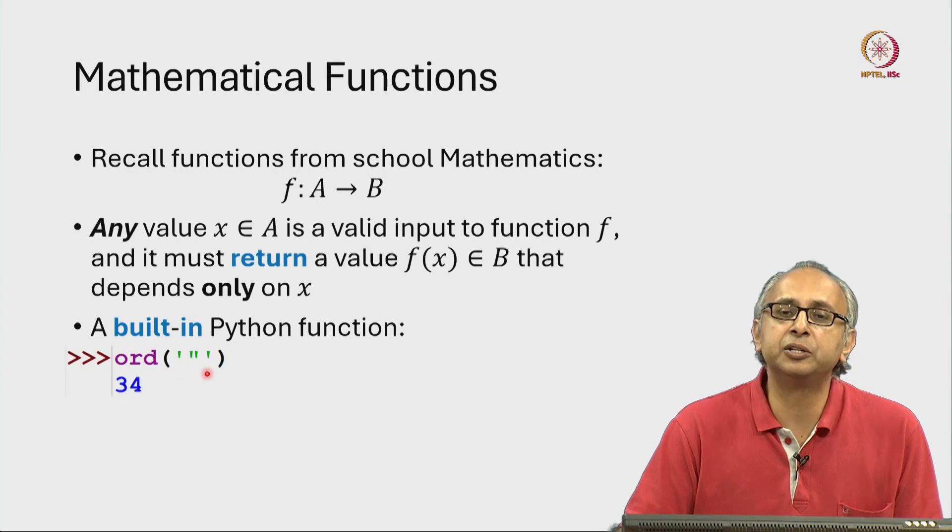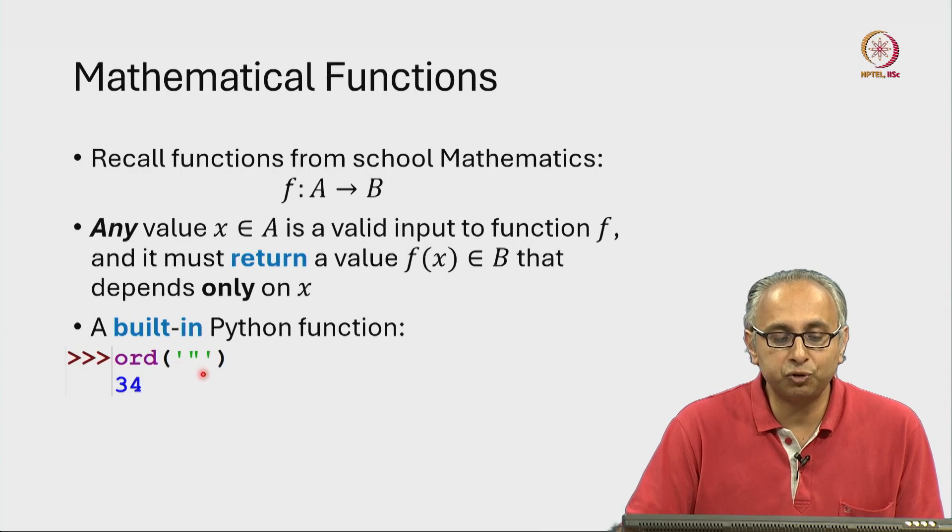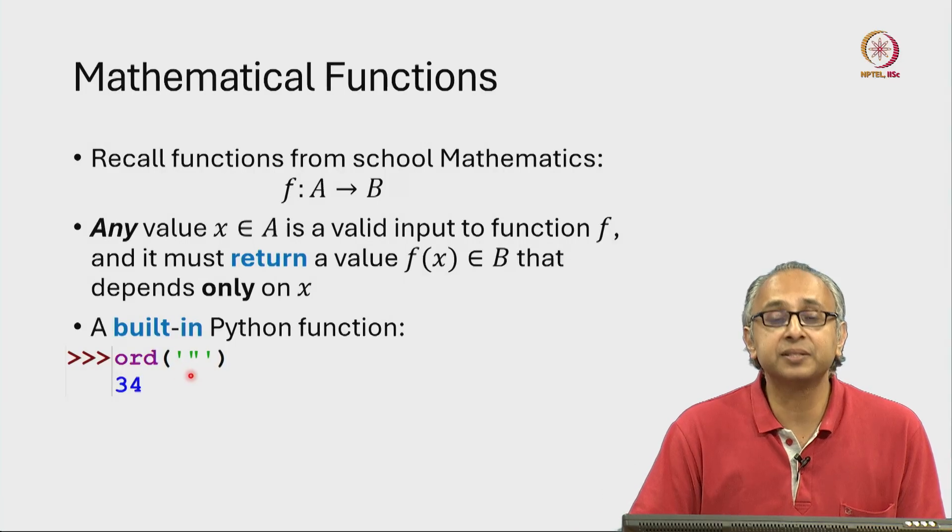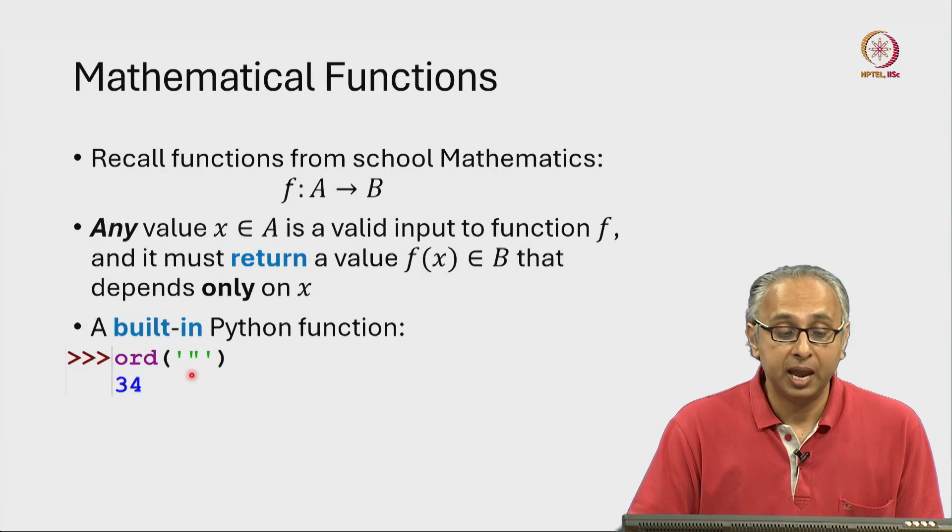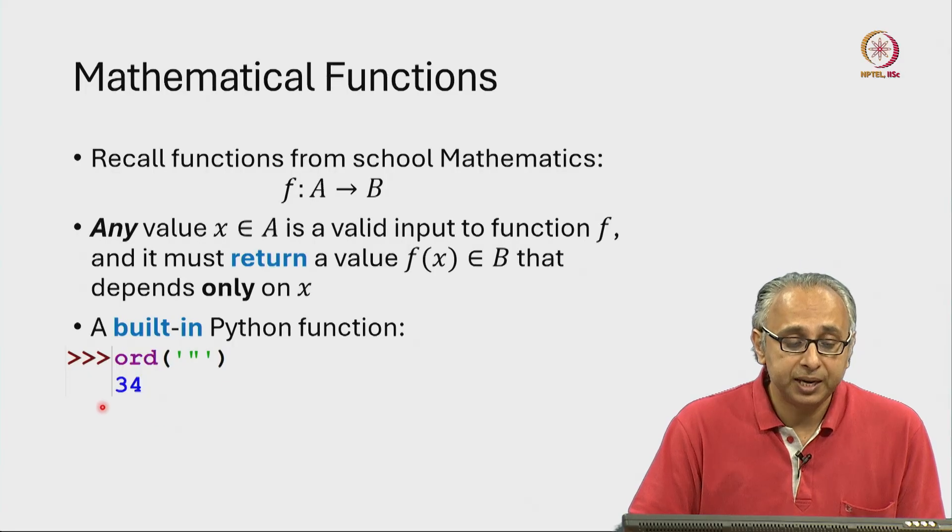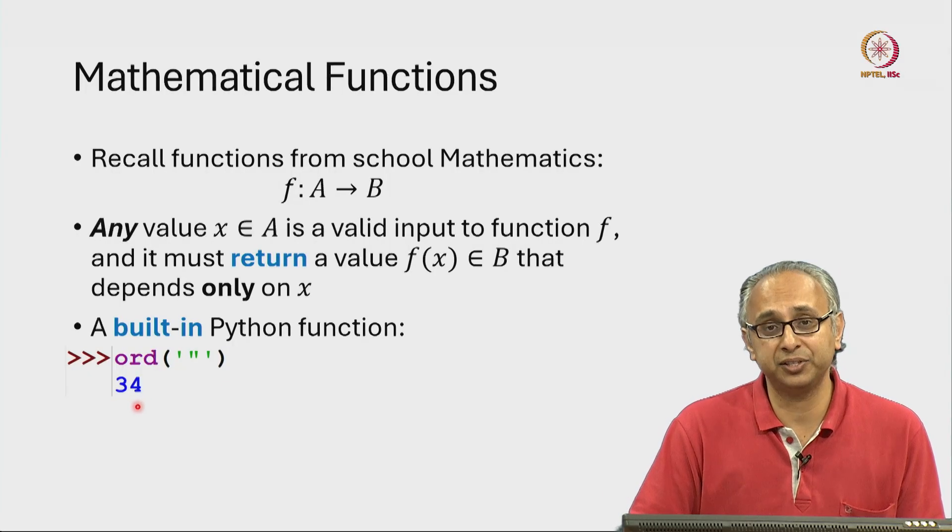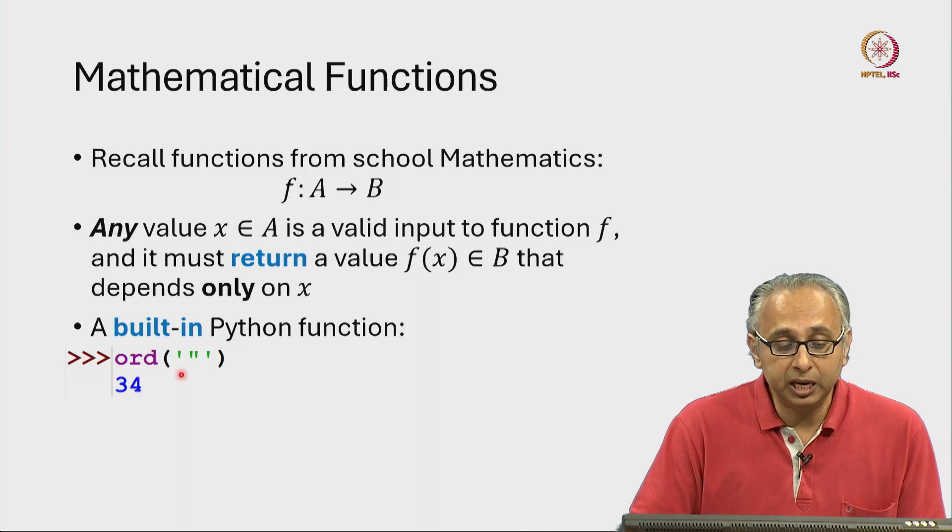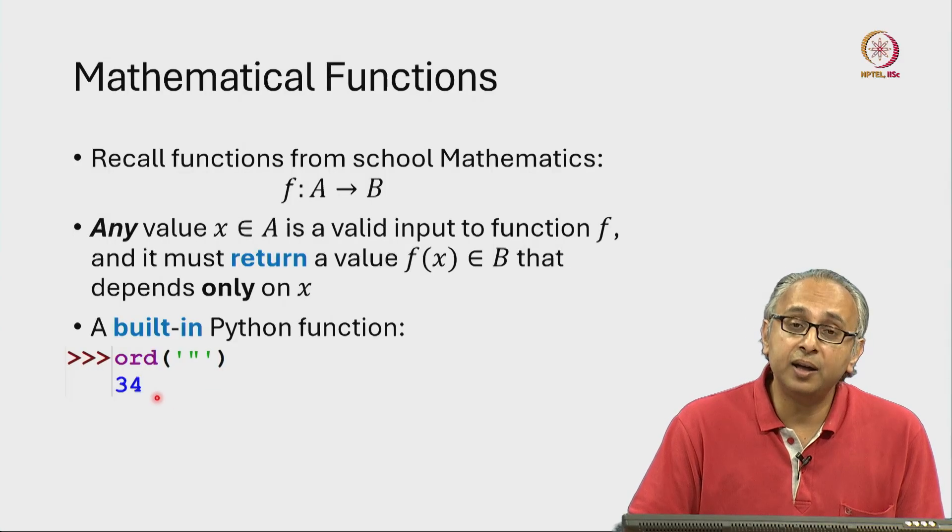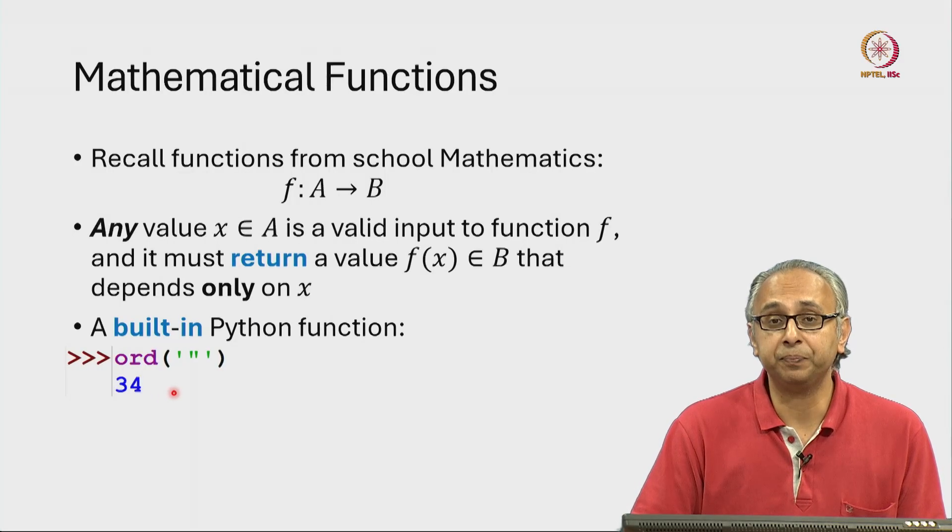So this may be a little bit hard to read but it is a string containing a single letter and that single letter is the double quote. And what you can see is the ord function when I press enter in the REPL it is returning an answer. It is returning the answer 34. So the inputs to this ord function appear to be strings and the answer appears to be an integer.